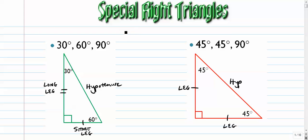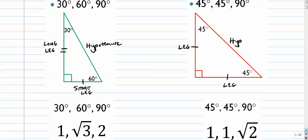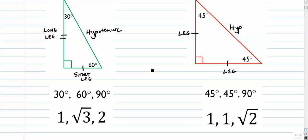Now, the reason these are special is because their sides are in a nice extended ratio. We don't need to use calculators to solve these. We don't need to use the Pythagorean Theorem — we don't need any of that stuff if we know the trick. In a 30-60-90, the sides are in the ratio 1, radical 3, 2. Over here, it's 1, 1, radical 2. Those are the things you want to memorize.